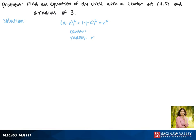From the information given, we know that our center is at the point (4, 3) and our radius is 3 units.